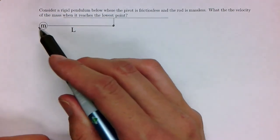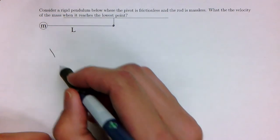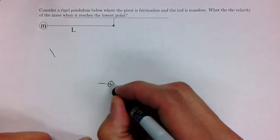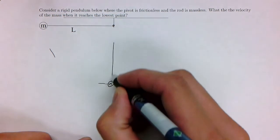So this is the initial state. And it swings back down and the final state looks like this. That's the mass there. That would be L.